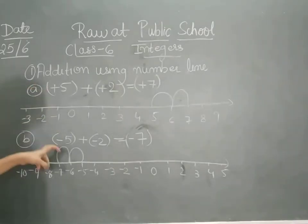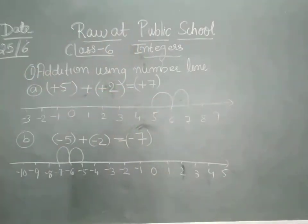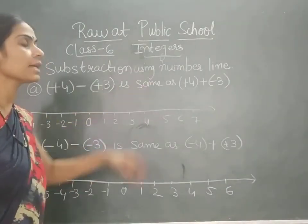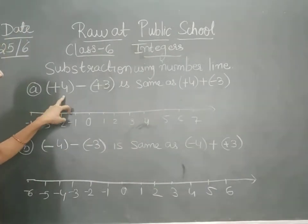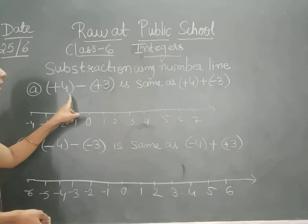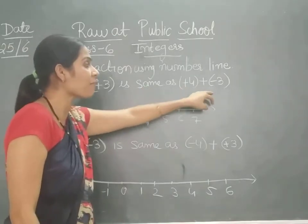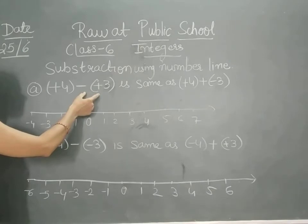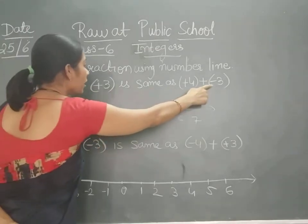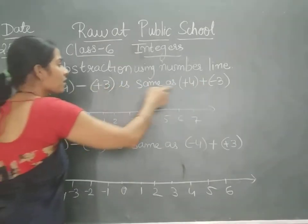In this way we do addition on the number line. Now let's see how we can do subtraction on the number line. Here I have taken an example: plus 4 minus plus 3. We can write it as plus 4 plus of minus 3. By changing the signs — if it is minus we change it to plus, and if it is plus we convert it into minus.